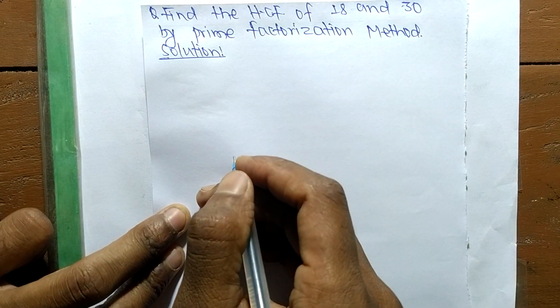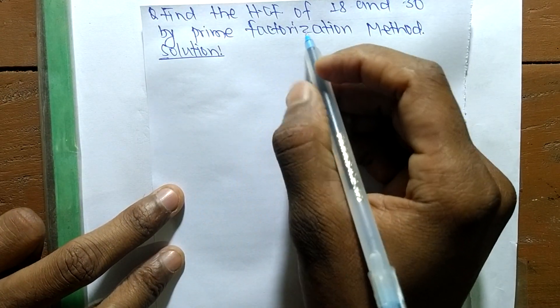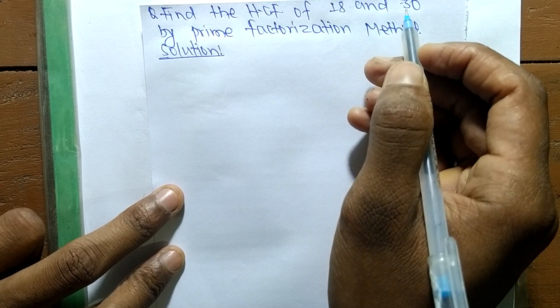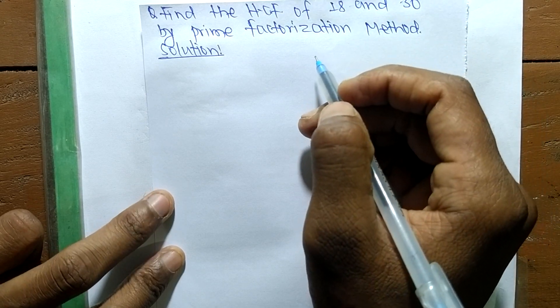Today in this video, we will learn to find the HCF of 18 and 30 by prime factorization method.